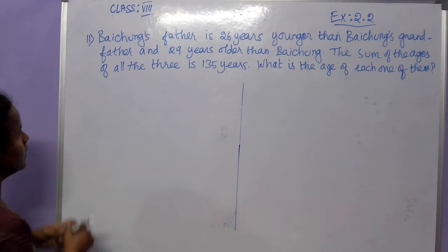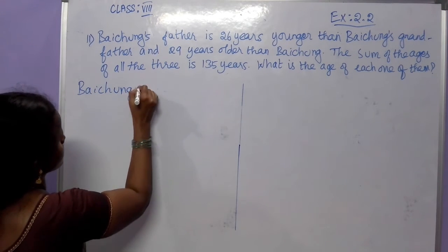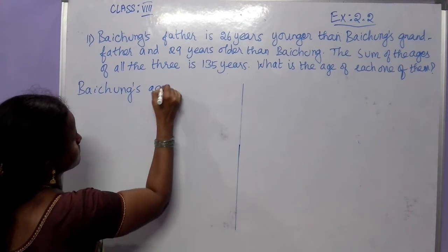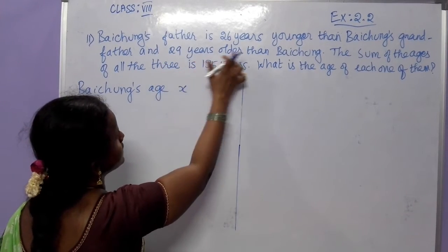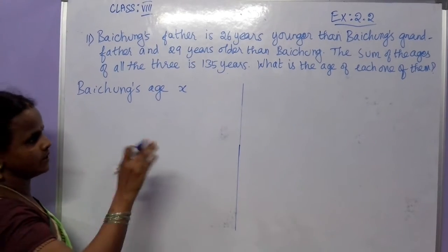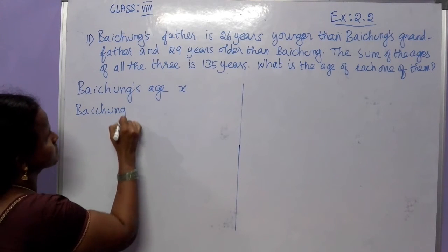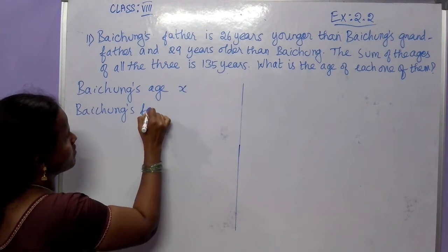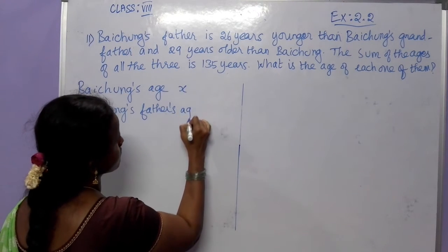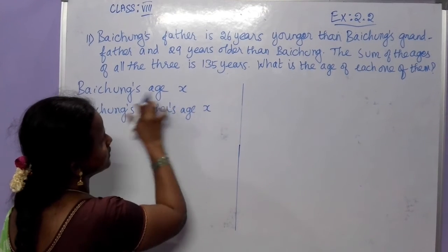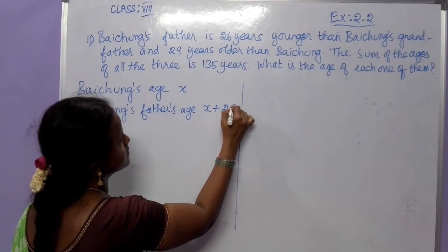Let us take Pacham's age as x. His father is 29 years older than Pacham, so Pacham's father's age is x plus 29.